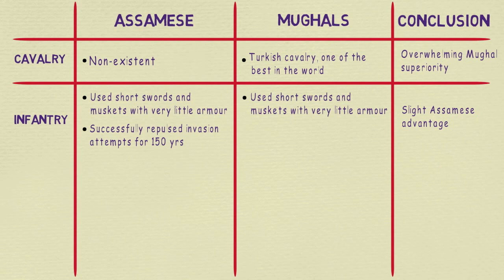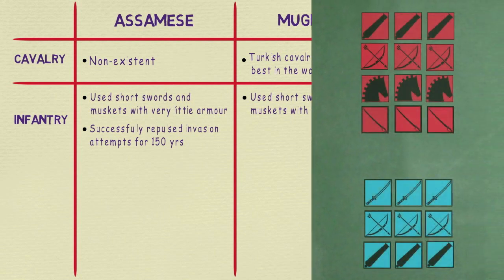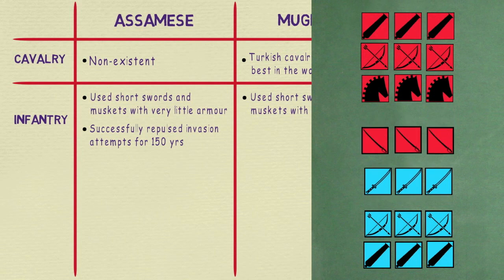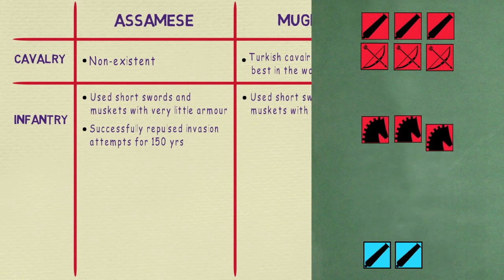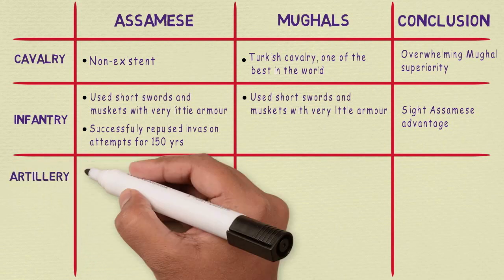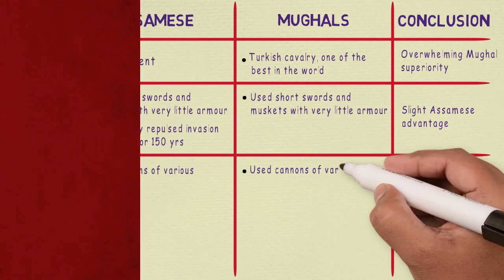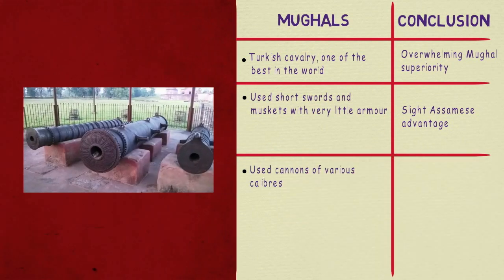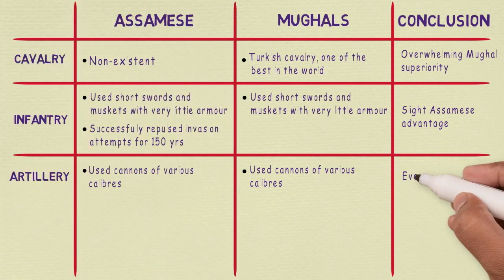A good example of the superiority of the Assamese infantry and also their vulnerability to cavalry charges is the engagement at Alaboi in August 1667. The Assamese infantry defeated the initial Mughal infantry charge, but then Mughal cavalry charged their positions and the Assamese forces were crushed with an estimated 10,000 soldiers dead on the field. Moving on to artillery: both forces employed cannons of various calibers. The largest Assamese cannons were called Mitha Hulungs, some of which fired cannonballs as heavy as 200 pounds.